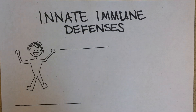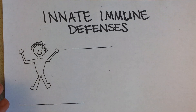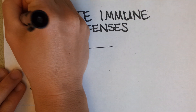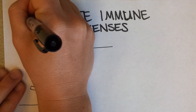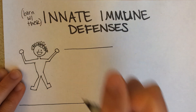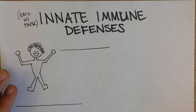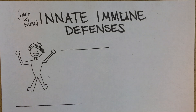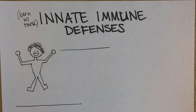Innate immune defenses are defenses that our body is born with. Unlike adaptive immunity — which, as you can hear in the name, adapts over time to the different things you're exposed to — let's go ahead and look at the different kinds of innate defenses that you are born with.